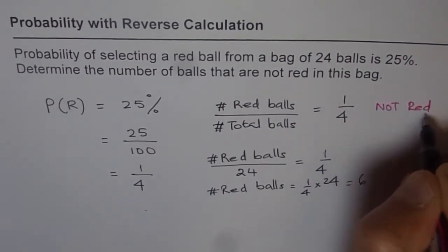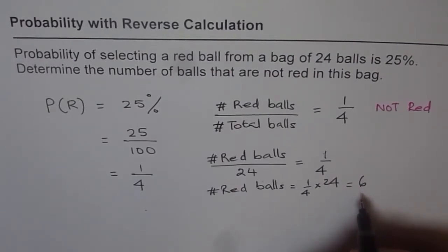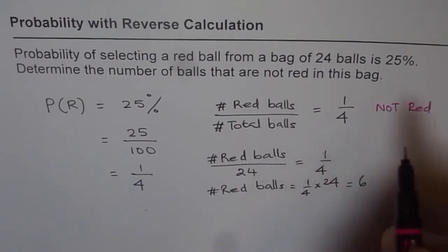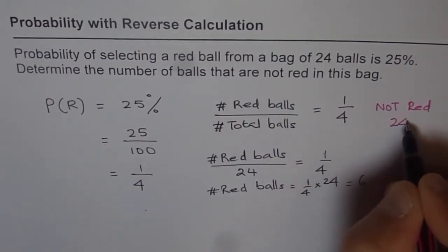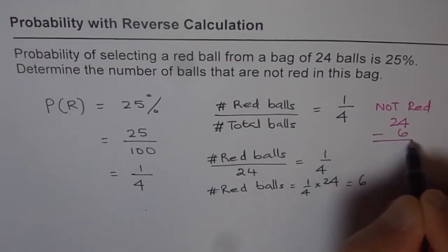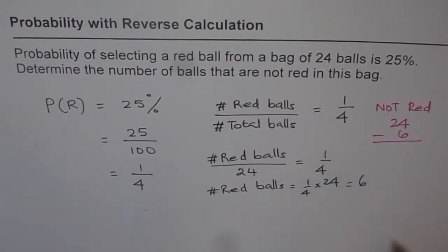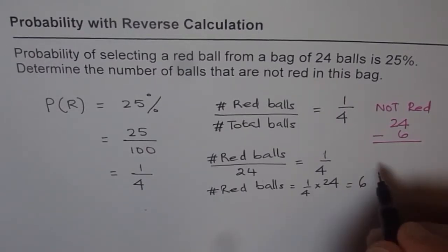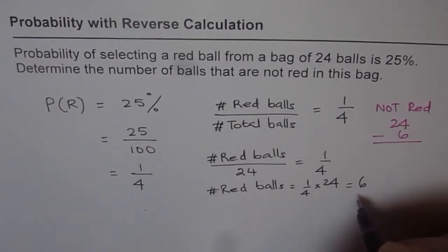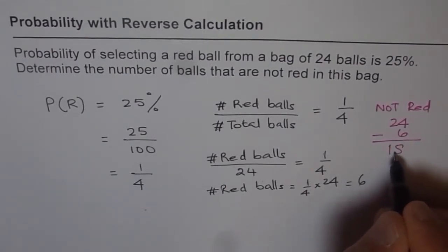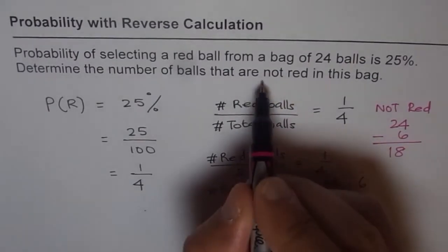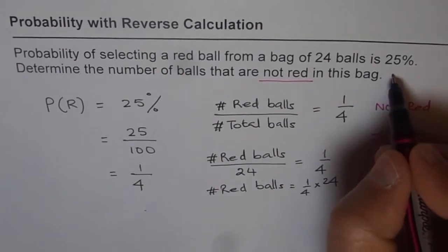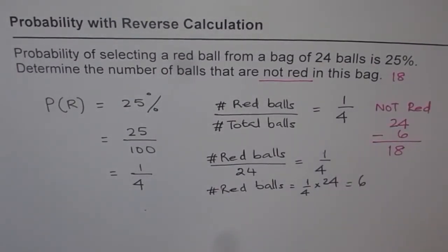Not red equals total number of balls minus red balls. That is 24 minus 6. So the number of balls that are not red is 18. That is how you need to answer this question — the number of balls not red is 18.